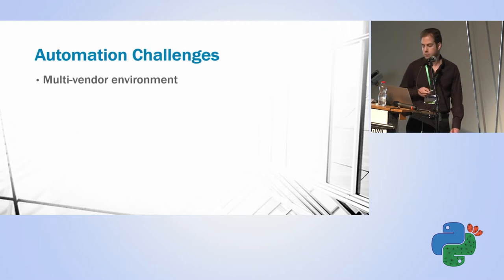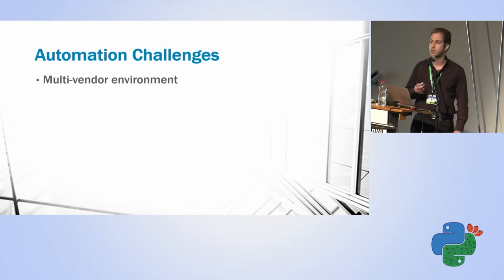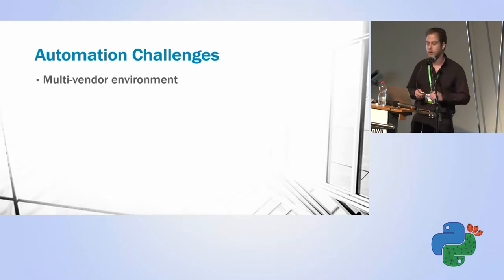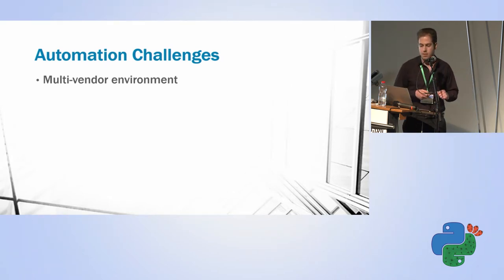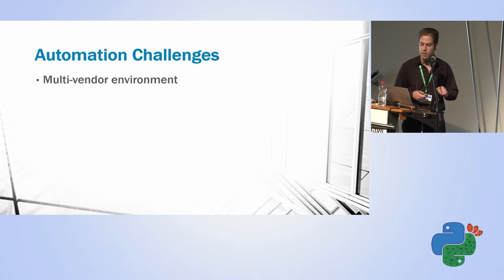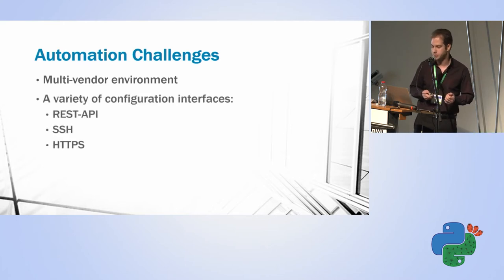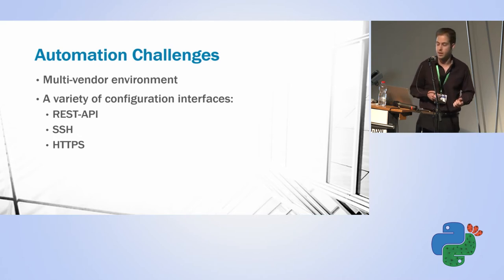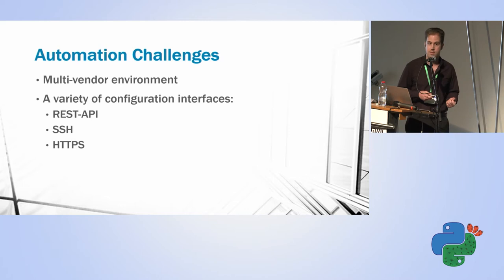The automation challenges involve a multi-vendor environment. Not all your switches are from the same vendor — maybe you're running Hyper-V and VMware. You need to know how to interact with each one: Hyper-V, VMware, Cisco switches, Juniper switches, et cetera. You also have a variety of configuration interfaces — SSH, REST API, HTTPS — and you need to know how to work with each.